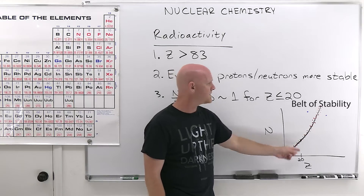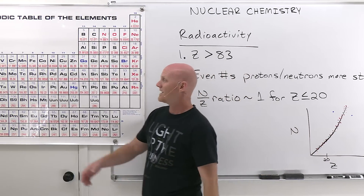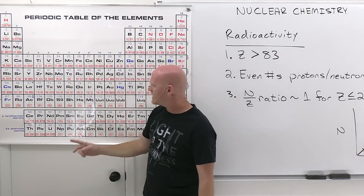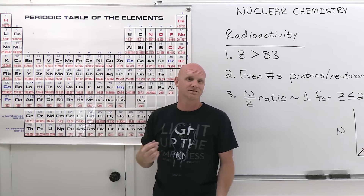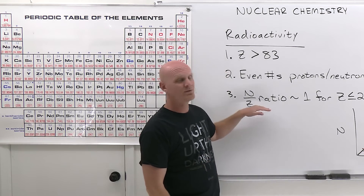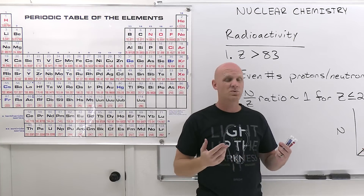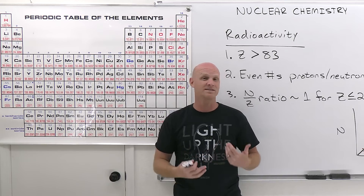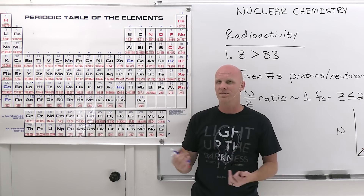The neutron-to-proton ratio is one-to-one for elements up to calcium, atomic number 20, and gradually increases from there. For example, for iron it might be around 1.05, and for uranium it might be around 1.6. For elements above calcium, getting an exact ideal N over Z ratio is not straightforward. So exam questions regarding N over Z ratio are more likely to focus on atomic number 20 or less, where the ideal ratio is exactly one.